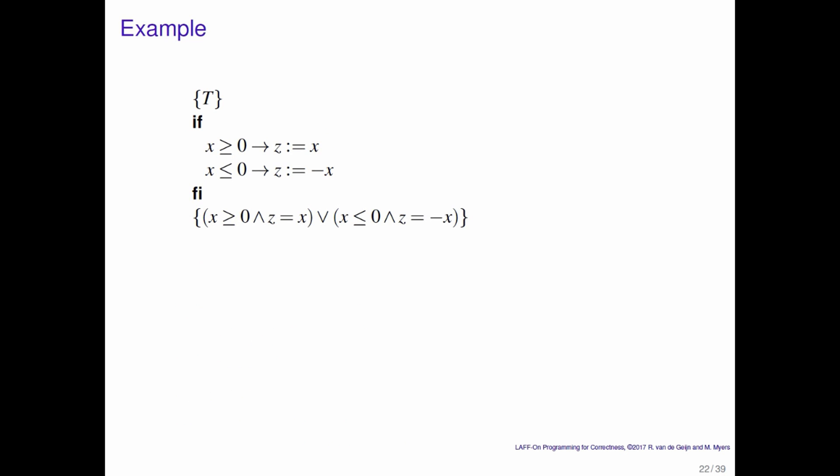So here is our example again where we set Z equal to the absolute value of X, except that I stated the post condition slightly differently. I stated it as X is greater than 0 and Z is equal to X when we're done, or X less than or equal to 0 and Z is equal to minus X. This is actually the way Meggie prefers stating the post condition for computing the absolute value. So let's have a look.